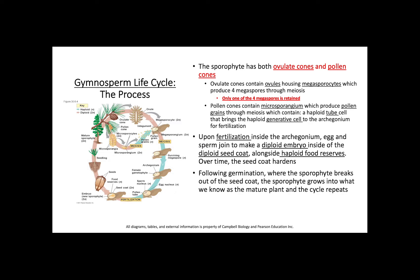Upon fertilization inside the archegonium, egg and sperm join to make a diploid embryo inside the diploid seed coat alongside haploid food reserves. Over time, the seed coat hardens, allowing the seed to remain dormant. Following germination, where the sporophyte breaks out of the seed coat, the sporophyte grows into the mature plant and the life cycle continues.